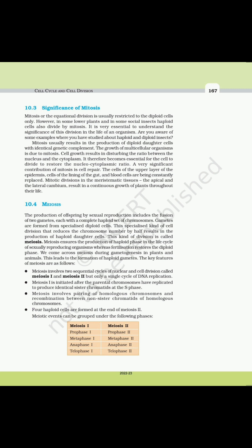10.4 Meiosis. The production of offspring by sexual reproduction includes the fusion of two gametes, each with a complete haploid set of chromosomes. Gametes are formed from specialized diploid cells. This specialized kind of cell division reduces the chromosome number by half, resulting in the production of haploid daughter cells — this is called meiosis. Meiosis ensures the production of haploid phase in the life cycle of sexually reproducing organisms, whereas fertilization restores the diploid phase. We come across meiosis during gametogenesis in plants and animals.